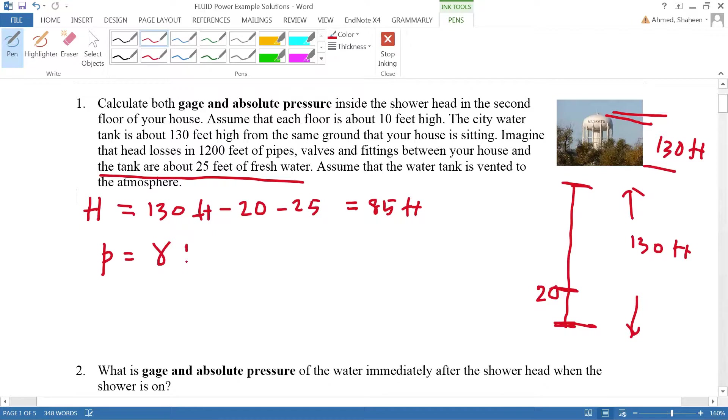P equals γH. This is fresh water, so gamma is 62.4 pounds per cubic foot - a one cubic foot box of water weighs 62.4 pounds. So that's 62.4 pounds per cubic foot times the head of 85 feet.